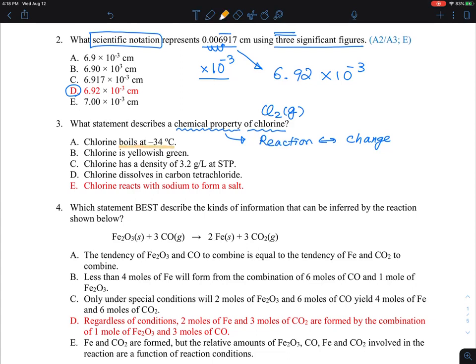Now if you look at here, chlorine: this is a boiling temperature, this is a color, this is a density, and this is also solubility in a certain solvent. So these are all four properties, what we call the physical properties.